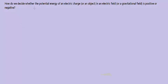Often we have difficulty in trying to understand whether the potential energy of an electric charge in a field is to be taken as positive or negative. In this video I will attempt to make this concept simple and help you identify whether the potential energy is positive or negative. We will be dealing with electric charge and electric field, but the same concept is also applicable to gravitational field and magnetic field.